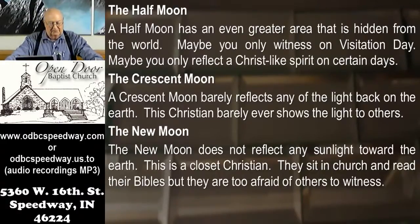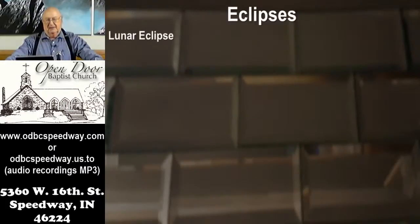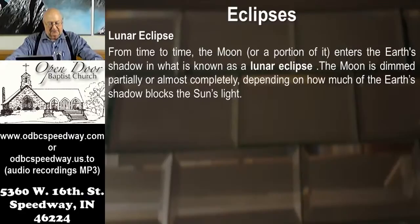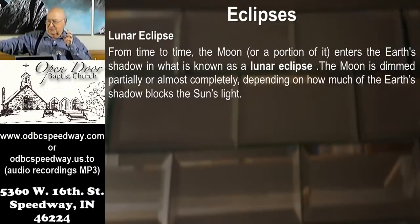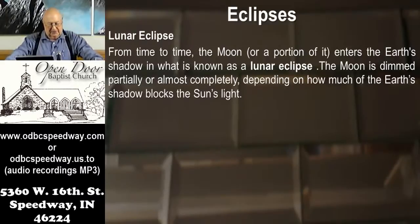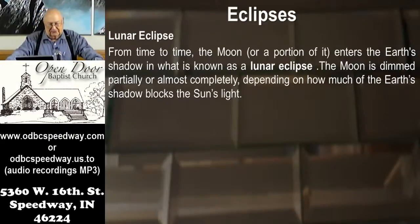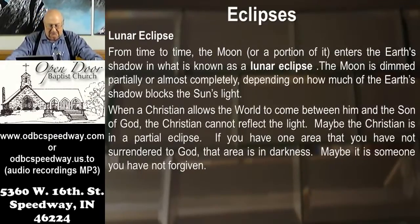Then he deals with the concept of eclipses — two kinds. One is the lunar eclipse, where the moon can't be seen. From time to time, the moon, or a portion of it, enters the earth's shadow. You line up the sun, the earth, and the moon, and the shadow of the earth hides the moon. There's no light from the sun shining on it as there is in all the different phases. The moon is dimmed partially or almost completely, depending on how much of the earth's shadow blocks the sun's light. In our object lesson, when a Christian allows the world to come between him and the Son of God, the Christian cannot reflect the light — he looks more like the world in its darkness.